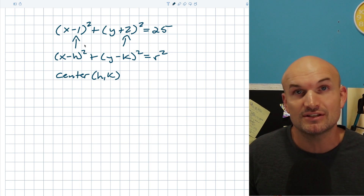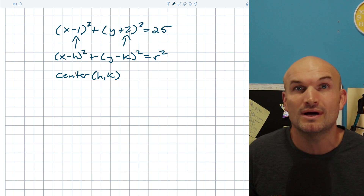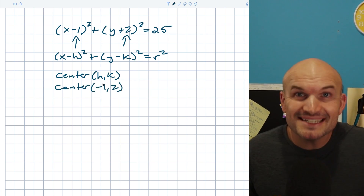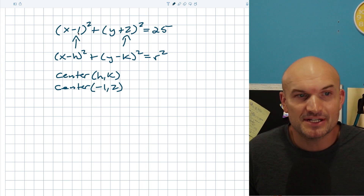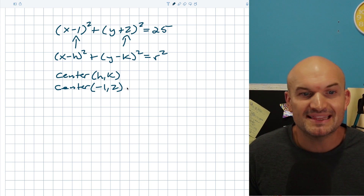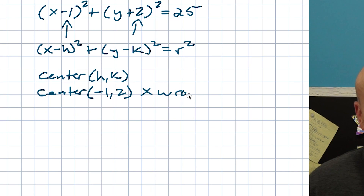One big mistake that students will make is they'll say that the center is going to be negative 1 comma 2. Please do not make that mistake. It makes sense because you can see a negative 1 and a 2, but that is going to be wrong.